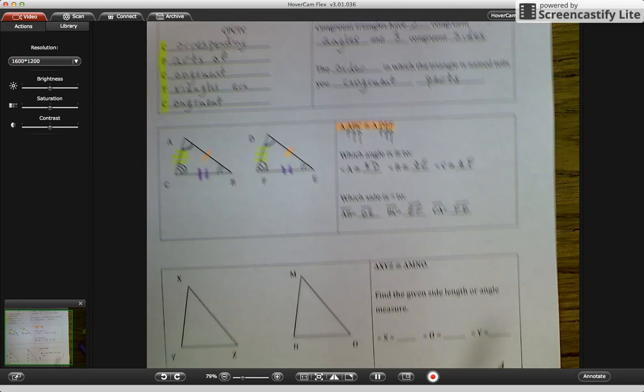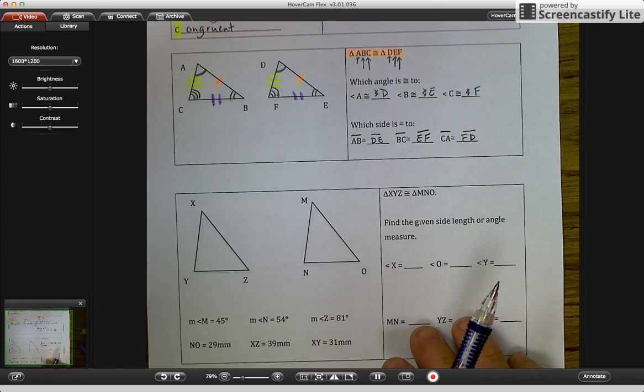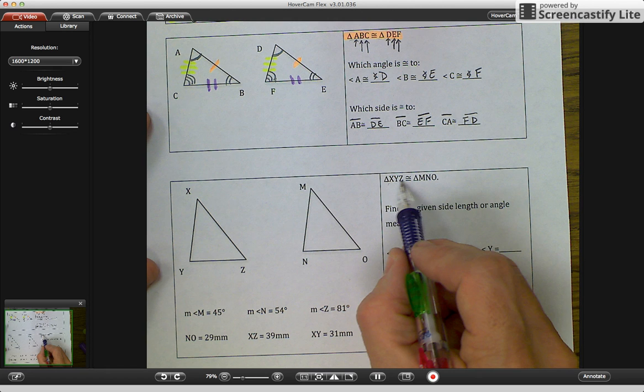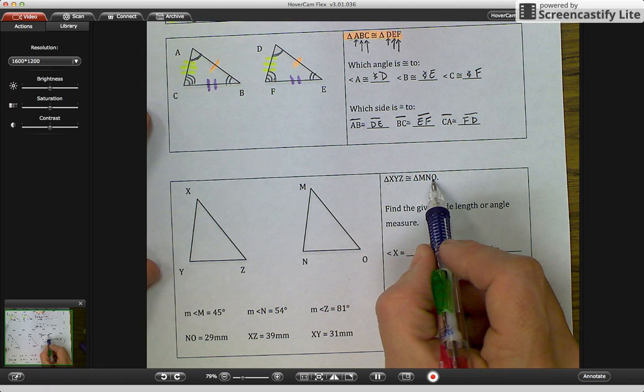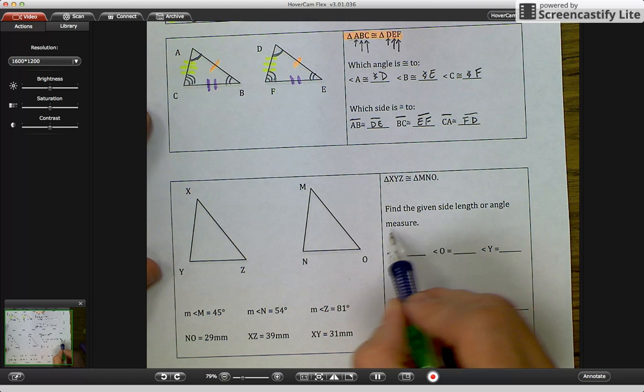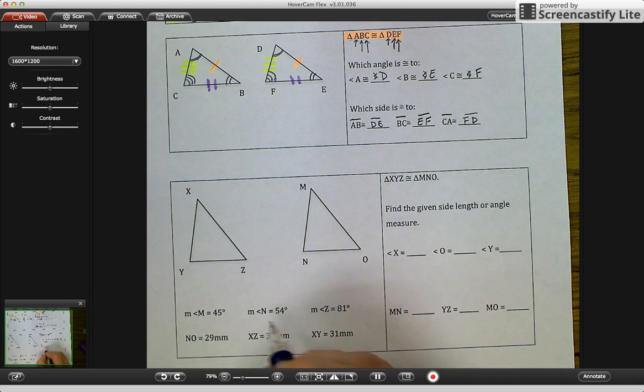Now let's look down at a third example. And we have our triangle XYZ is congruent to triangle MNO. And it says find the given side length or angle measure. So let's look at angle X. Do we have an angle X down here? No, we don't. But we have a lot of information. So what I'm going to do is I'm going to write this information in the given areas.